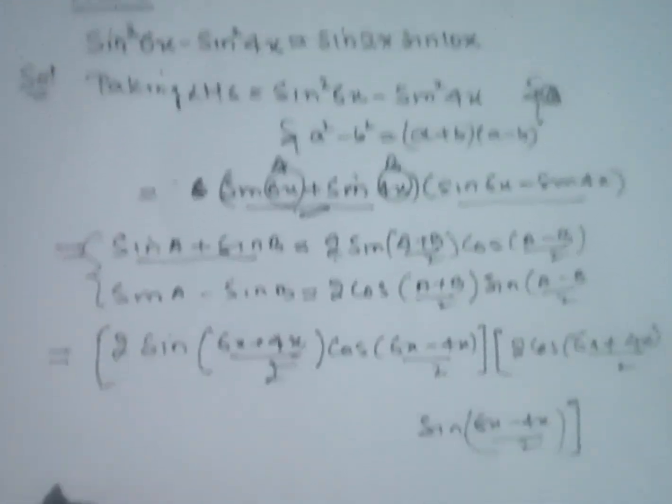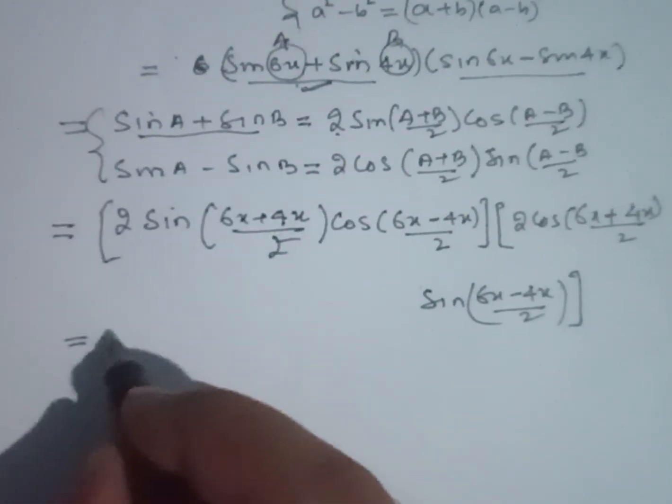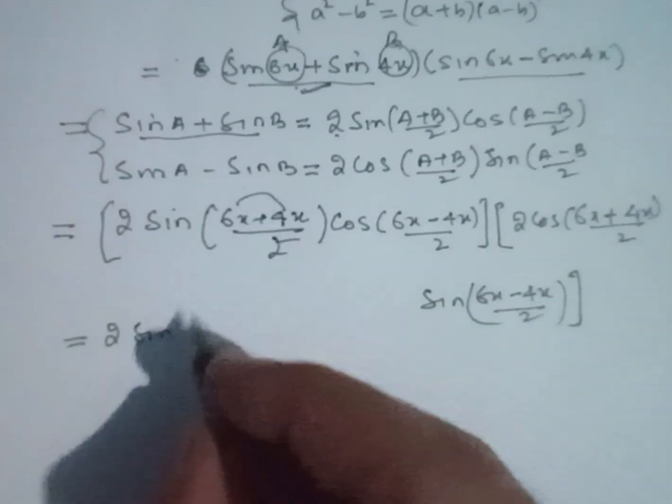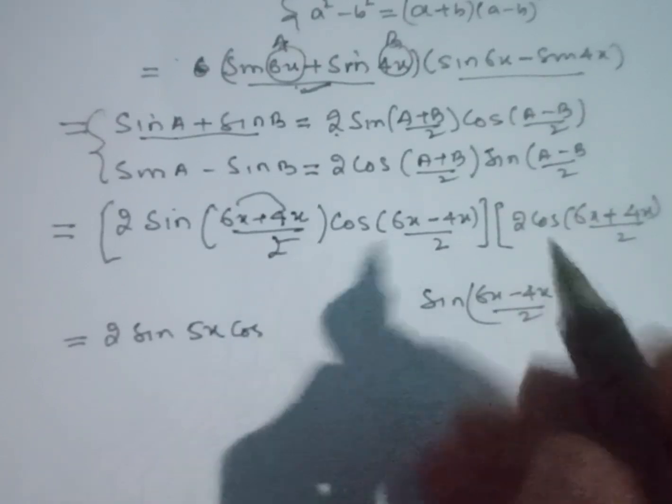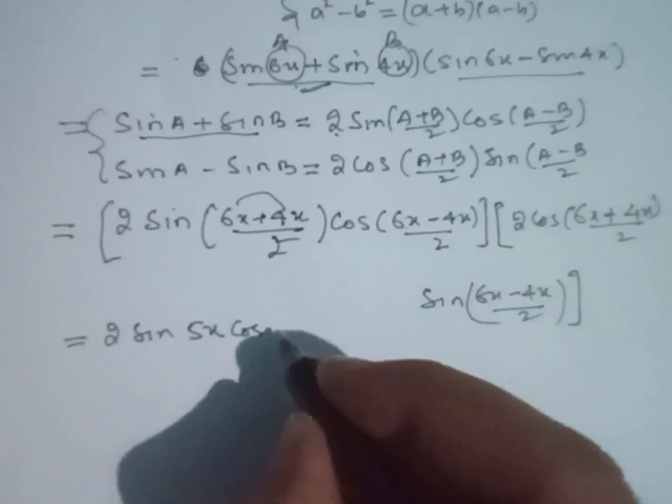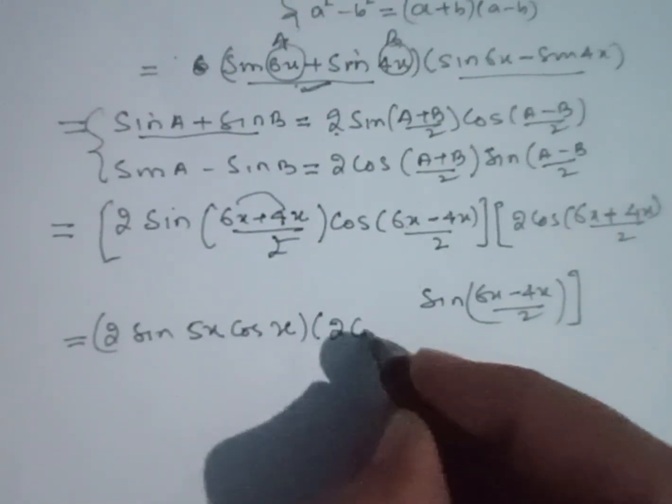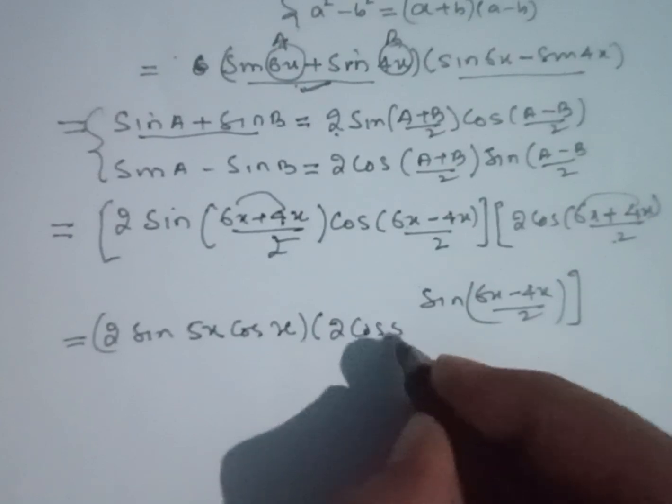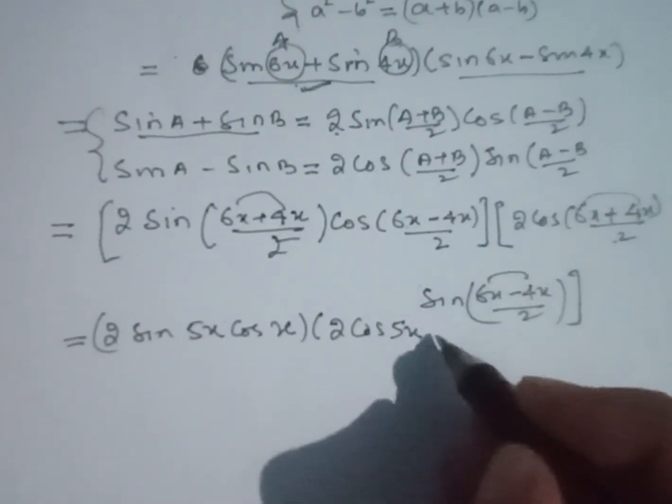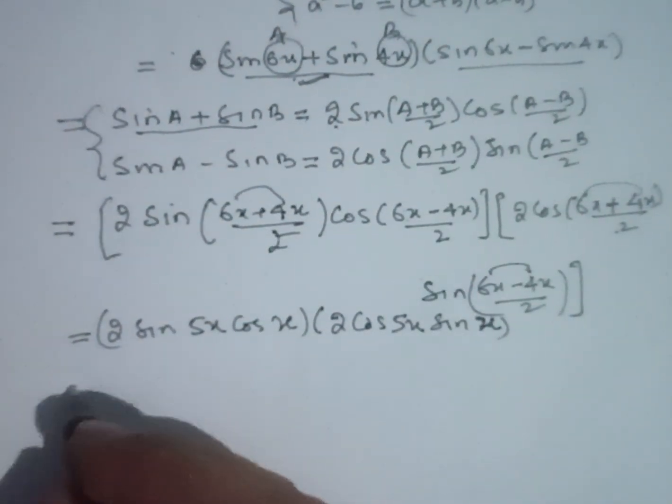And next step: 2 sin(10x/2 = 5x) cos(2x/2 = x). Bracket close, bracket start again: 2 cos(10x/2 = 5x) sin(2x/2 = x). Now arrange